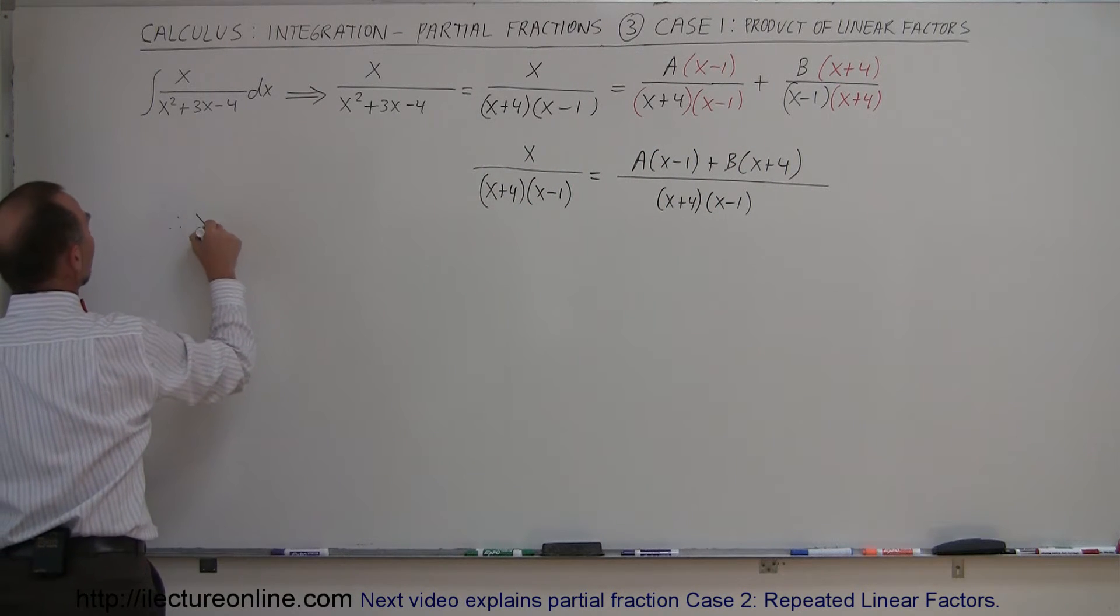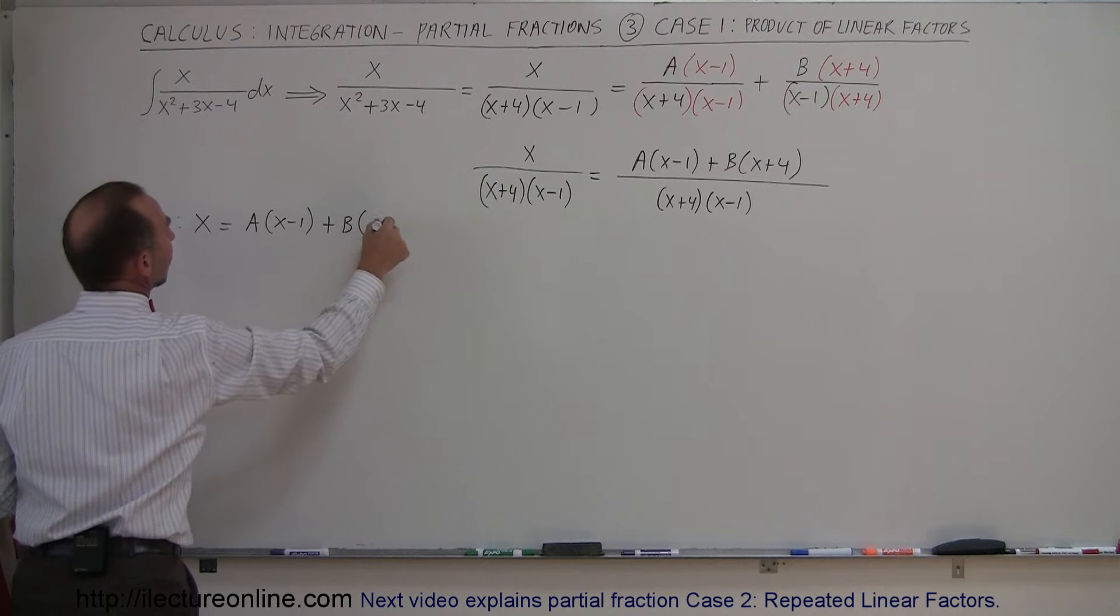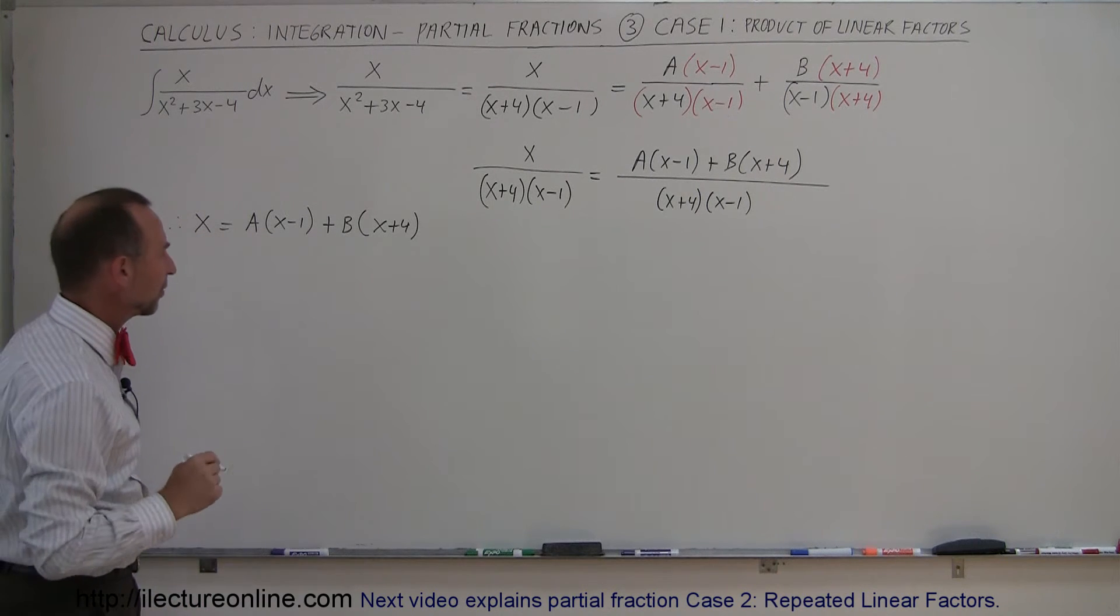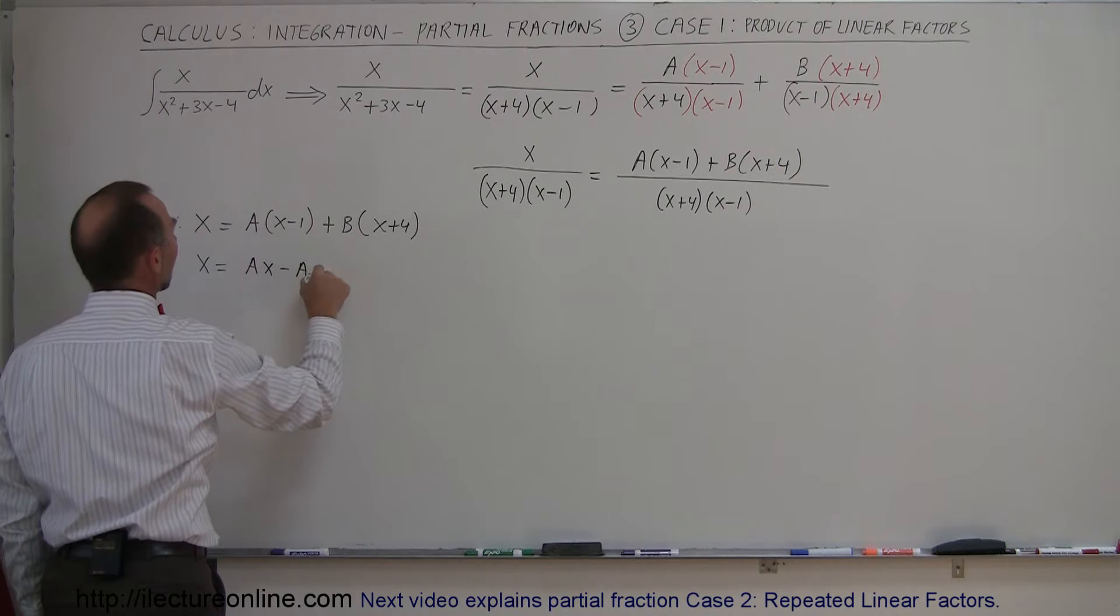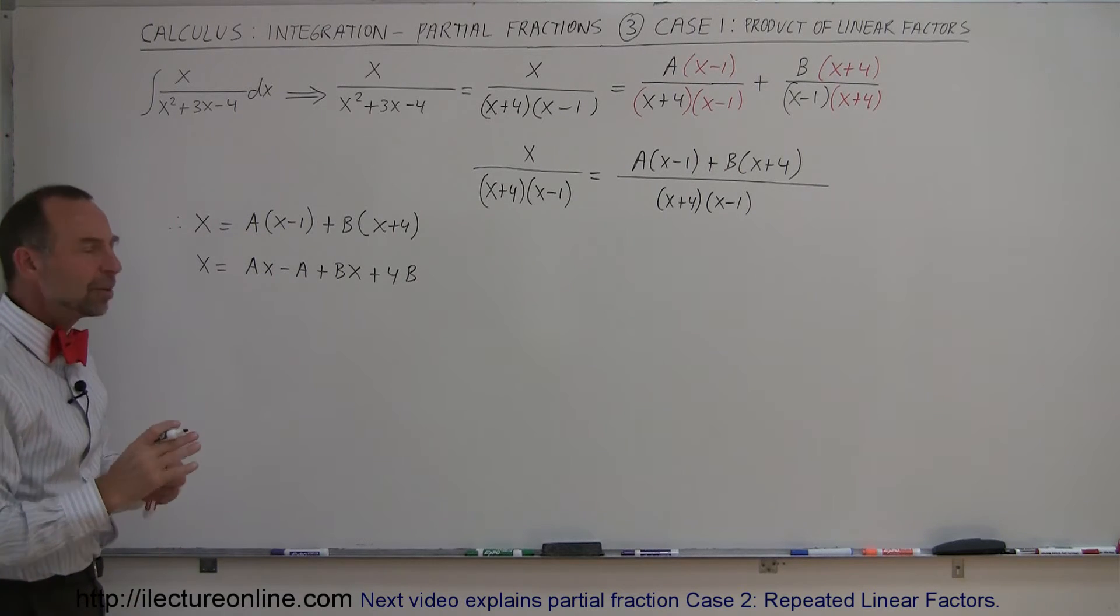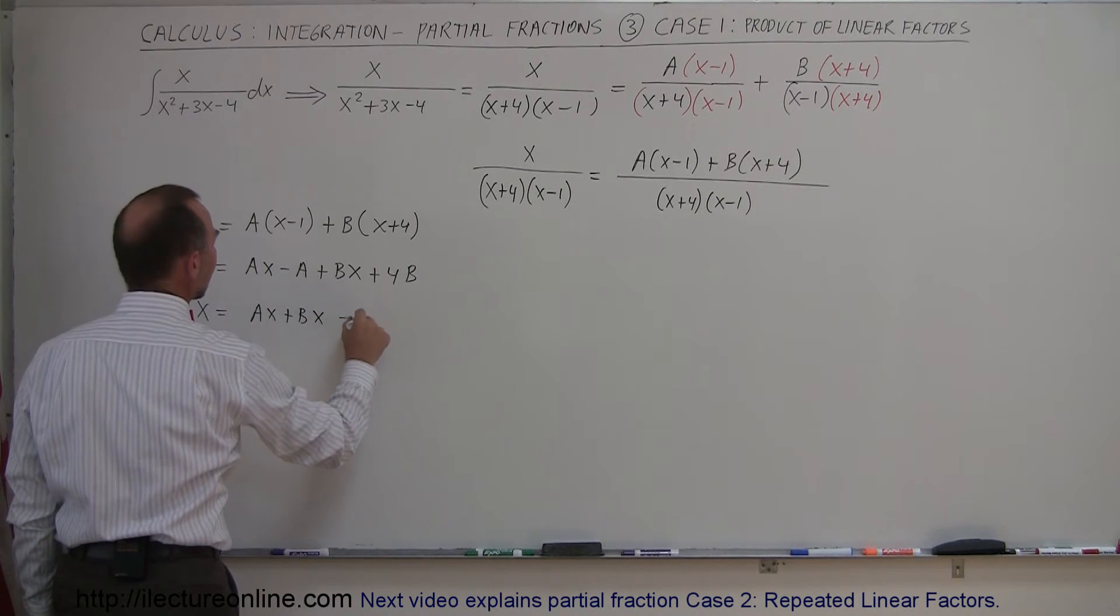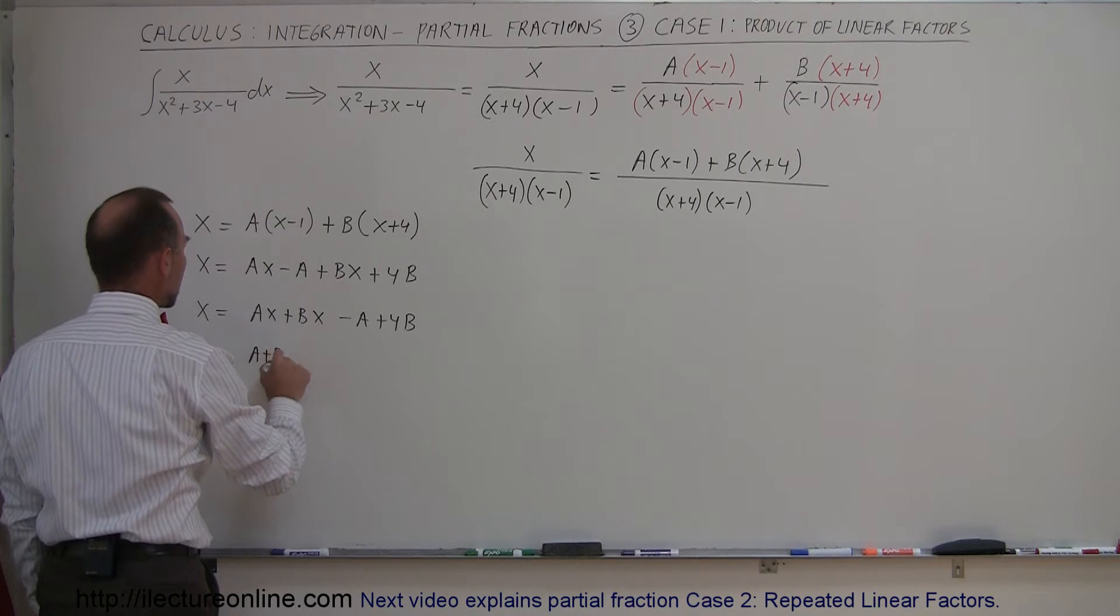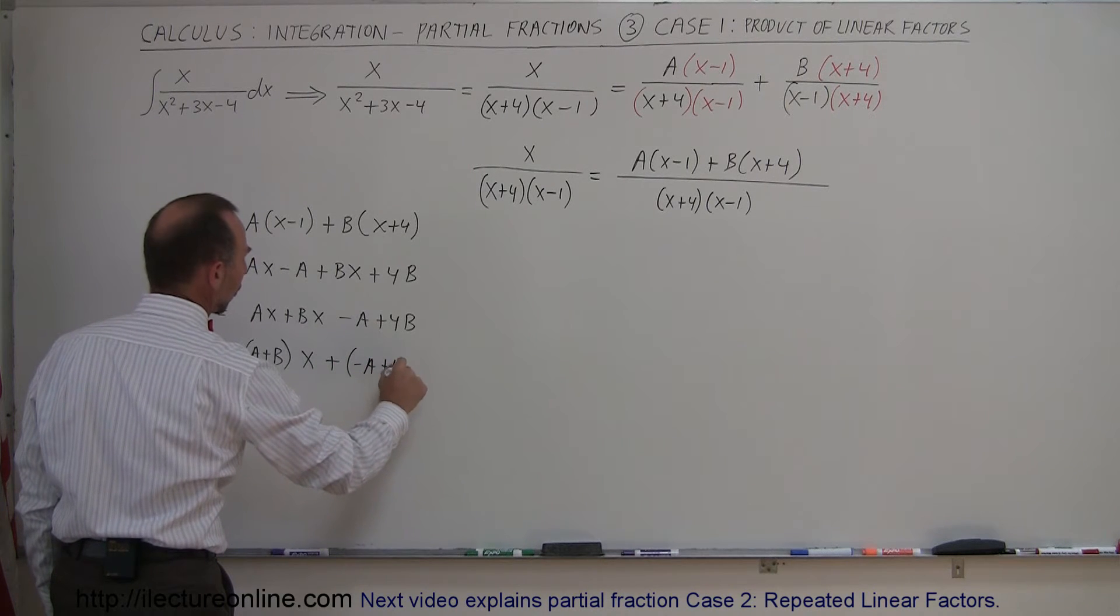So therefore, I can conclude that x is equal to a times x minus 1 plus b times x plus 4. And so the question now is what do a and b have to be equal to in order to make x equal to that? That's the idea. That's how we do that. So let's first multiply this out. So we have x is equal to ax minus a plus bx plus 4b. All right, so let me group things together. So we can say that x is equal to ax plus bx minus a plus 4b.